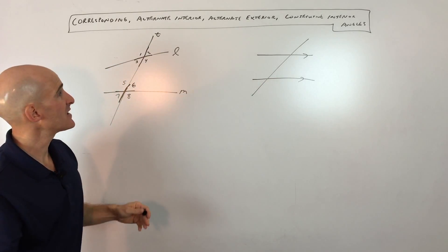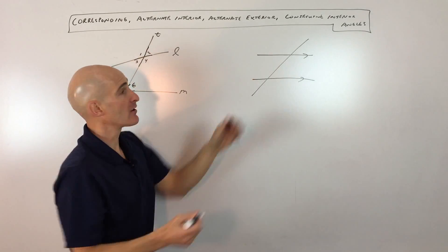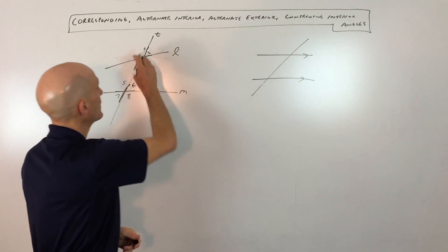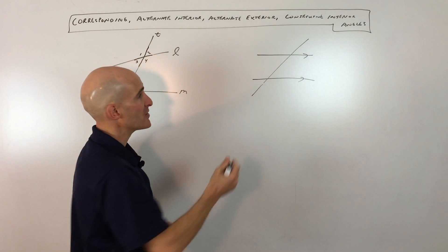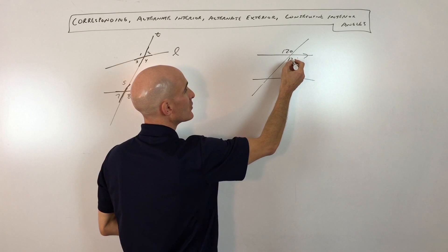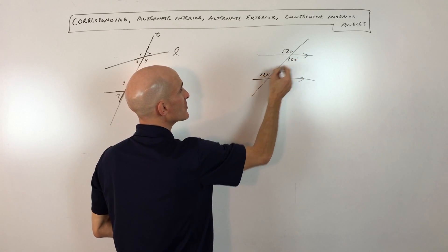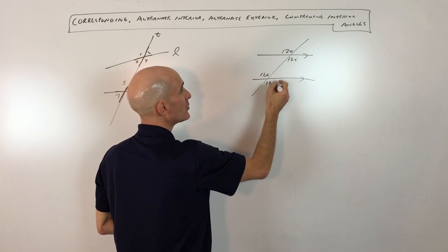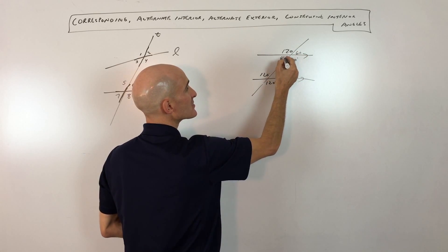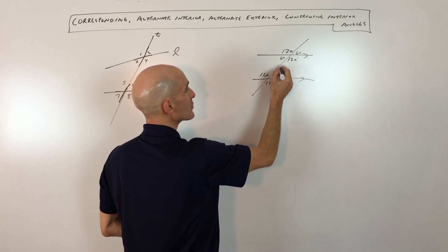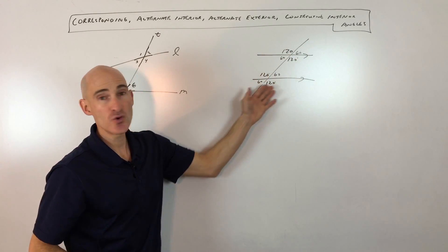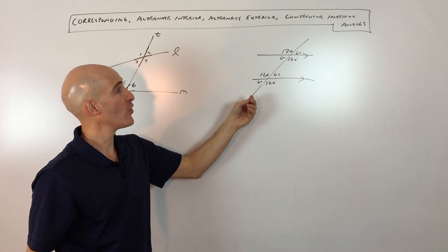Now one last thing to mention: in this diagram when the lines are parallel and they're cut by a transversal, even though you have eight angles, you only have two angle measures. Say, for example, this is 120 degrees — these are vertical angles, so this is 120. These are alternate interior, so this is 120. These are vertical, so 120. This is 60 because they're supplementary — a linear pair. These are 60 because they're vertical. This is 60 — alternate interior. And this is 60 because they're vertical angles. So you see there's only two angle measurements even though there are eight angles.